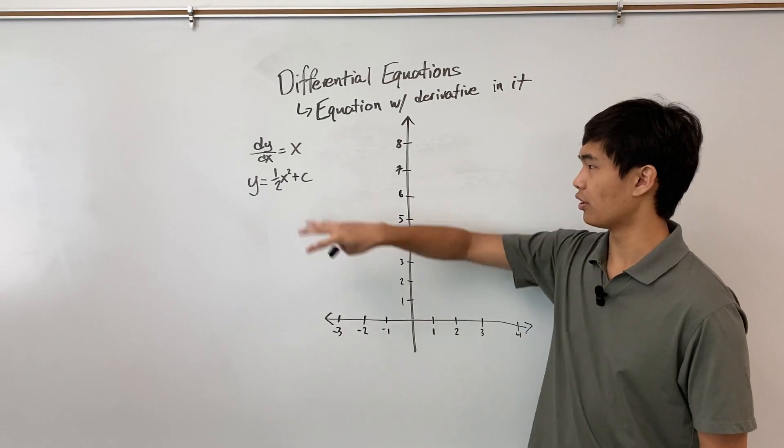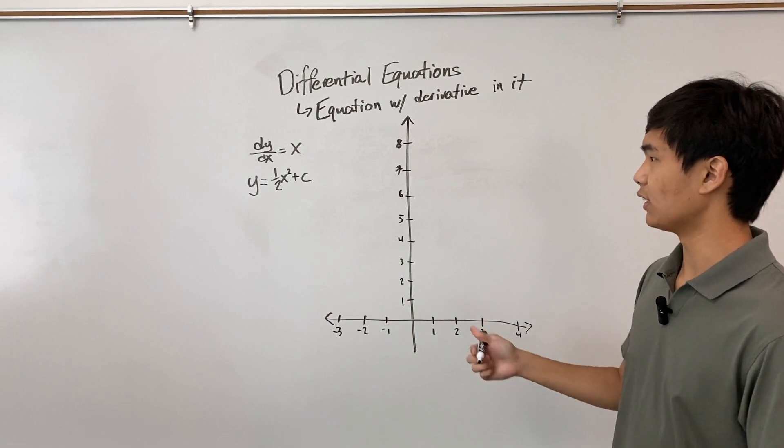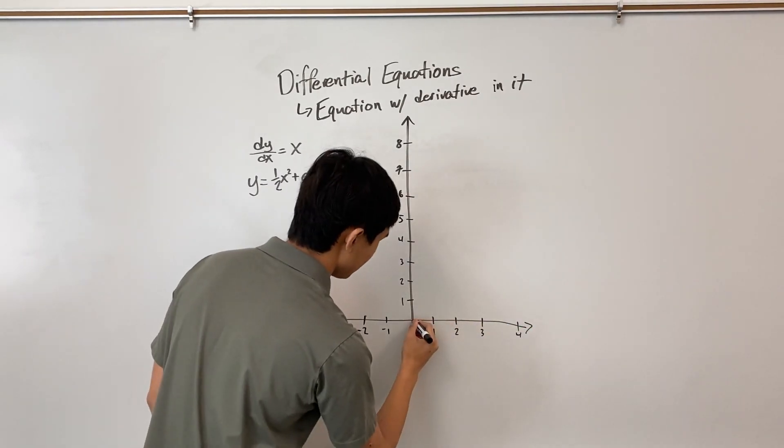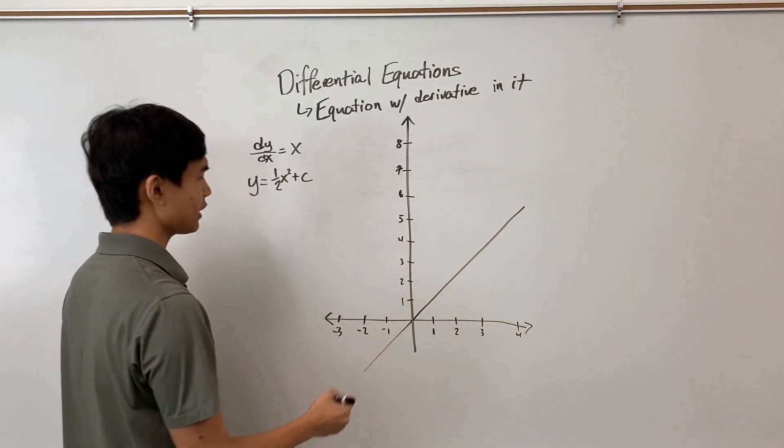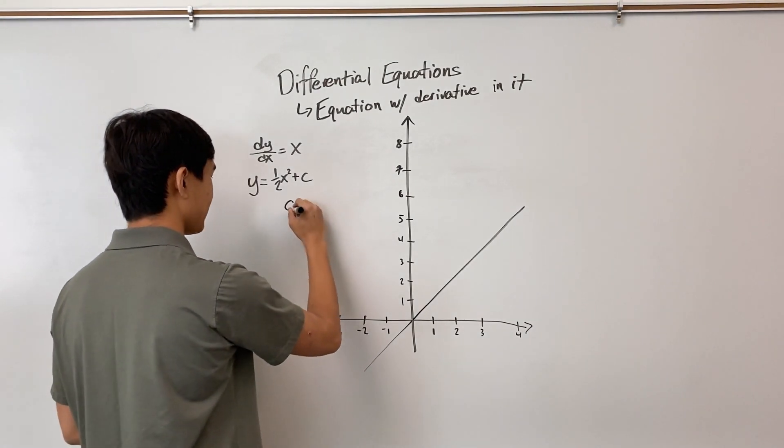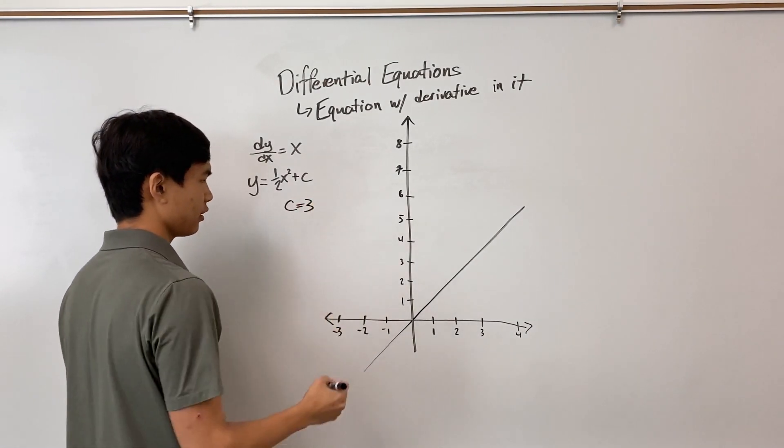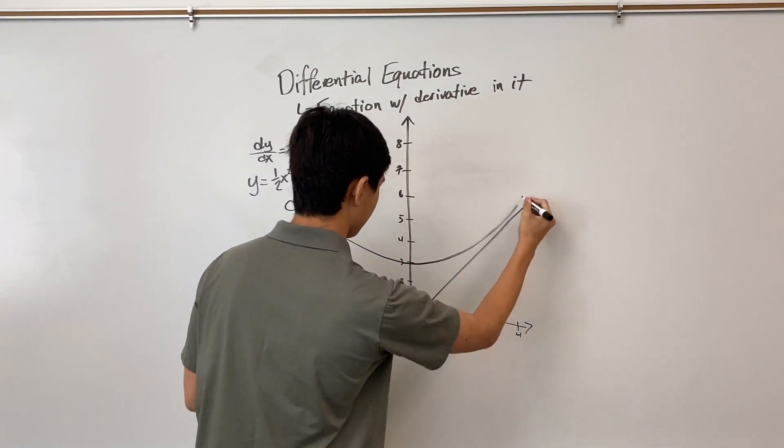Now I'm going to graph both of these curves on the same plane to show you how they're related. So when you're asked to graph these, you might just be tempted to just plot x like this. And then y = (1/2)x² + c. For this example, I'm going to take c = 3. So that would look something like that.